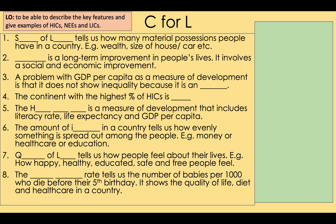Here are the answers. Number one: standard of living tells us how many material possessions people have in a country. Standard of living is measured as GDP per capita. Number two: a long-term improvement in people's lives is called development. Number three: a problem with GDP per capita as a measure of development is that it does not show inequality because it is an average — it doesn't show that there are some rich people and some poor people.